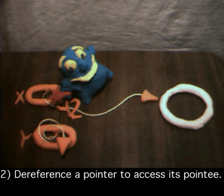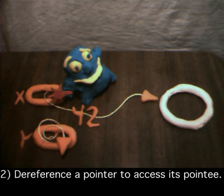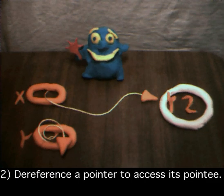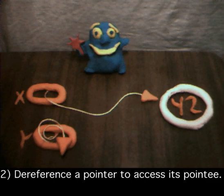Number two, pointer dereferencing starts at the pointer and follows its arrow over to access its pointee. As we all know, this only works if there is a pointee, which kinda gets back to rule number one.